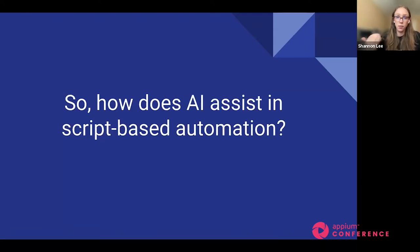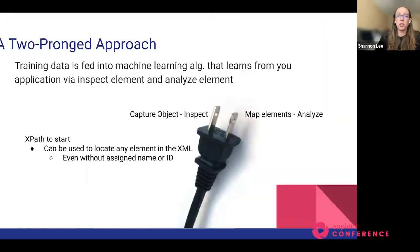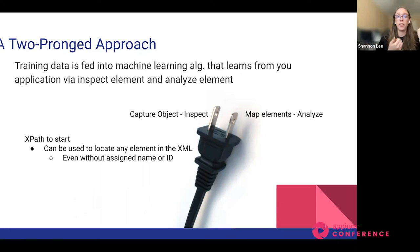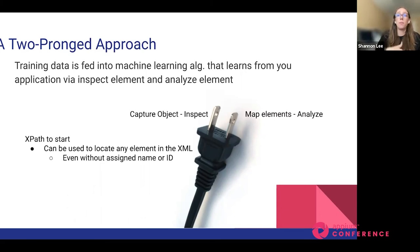Each locator strategy has its pros and cons, and unique IDs are best practice but not always achievable. Now let's dive into how AI assists script-based automation. We're going to approach this from two prongs. With any machine learning algorithm, you need a baseline to start the training data. We'll have training data fed into a machine learning algorithm that learns from your application via inspecting and analyzing elements — capturing the object by inspecting, and mapping elements by analyzing. XPaths are the starting point, with additional locator strategies to follow.